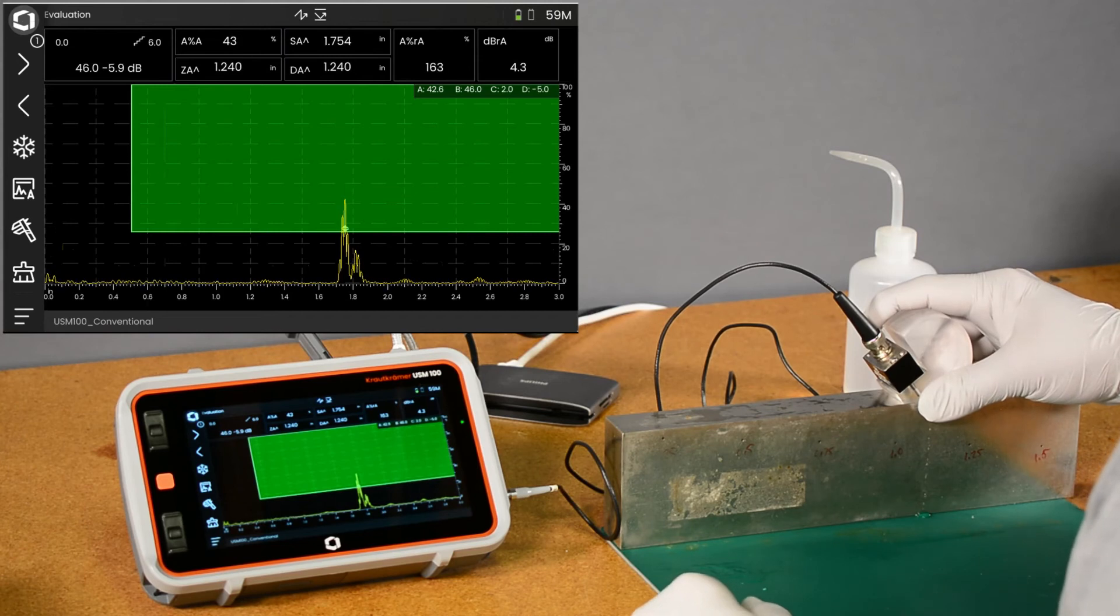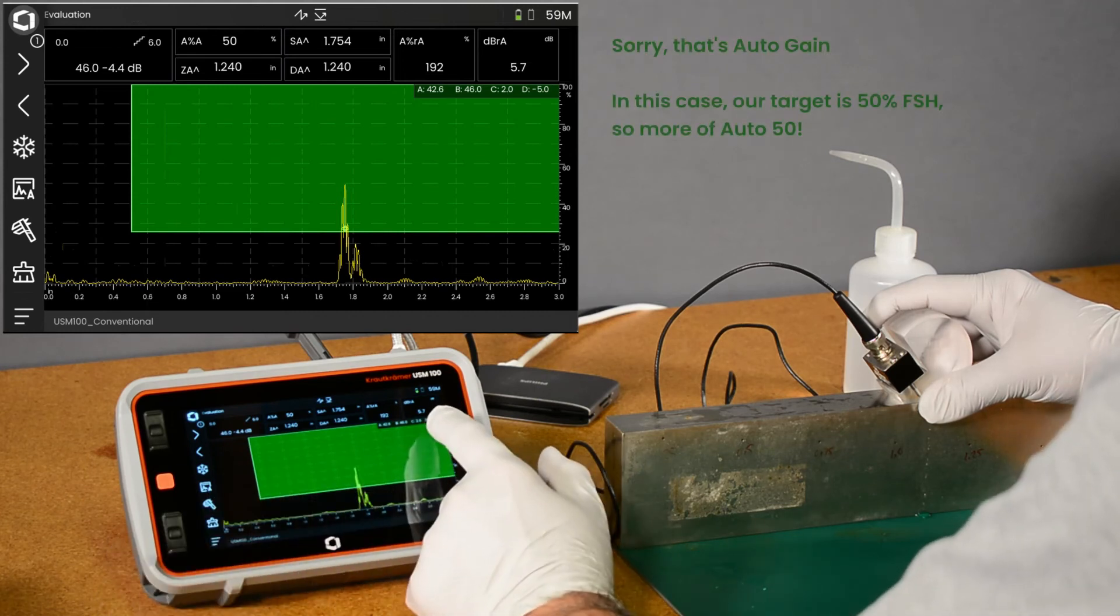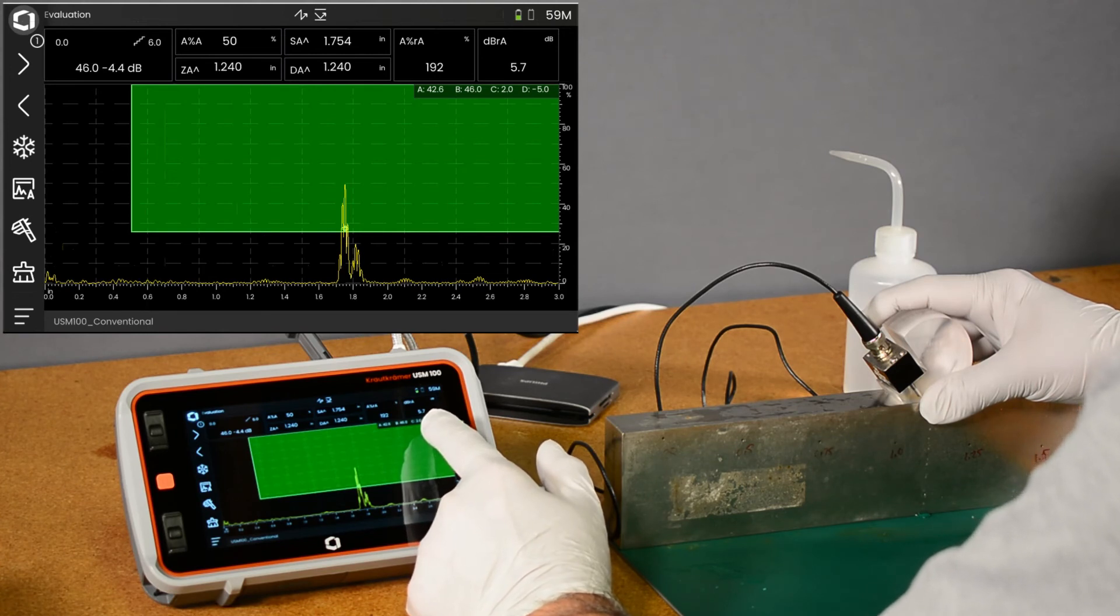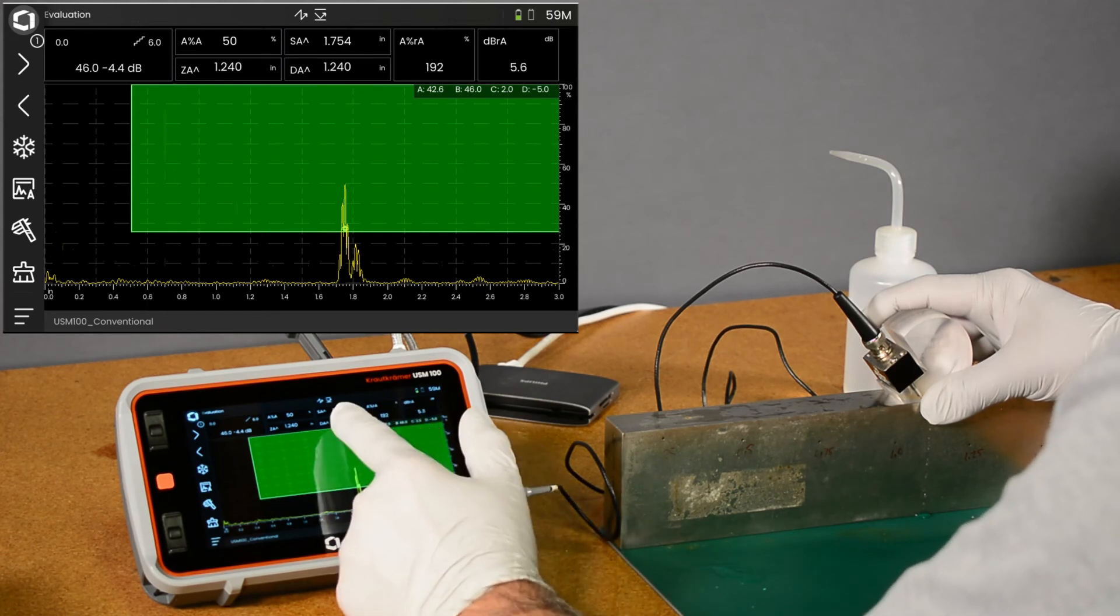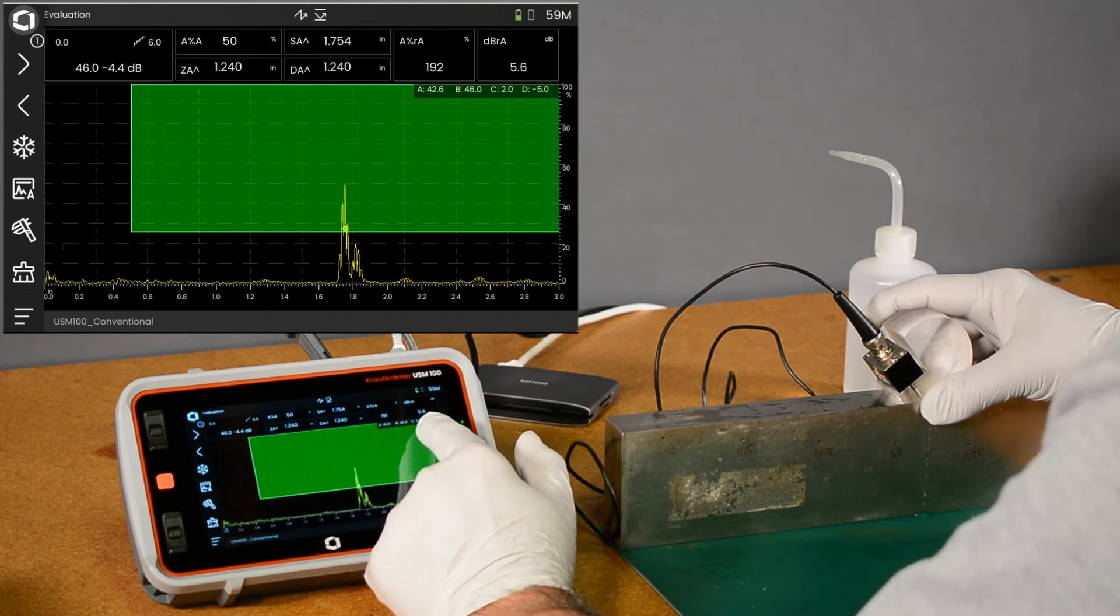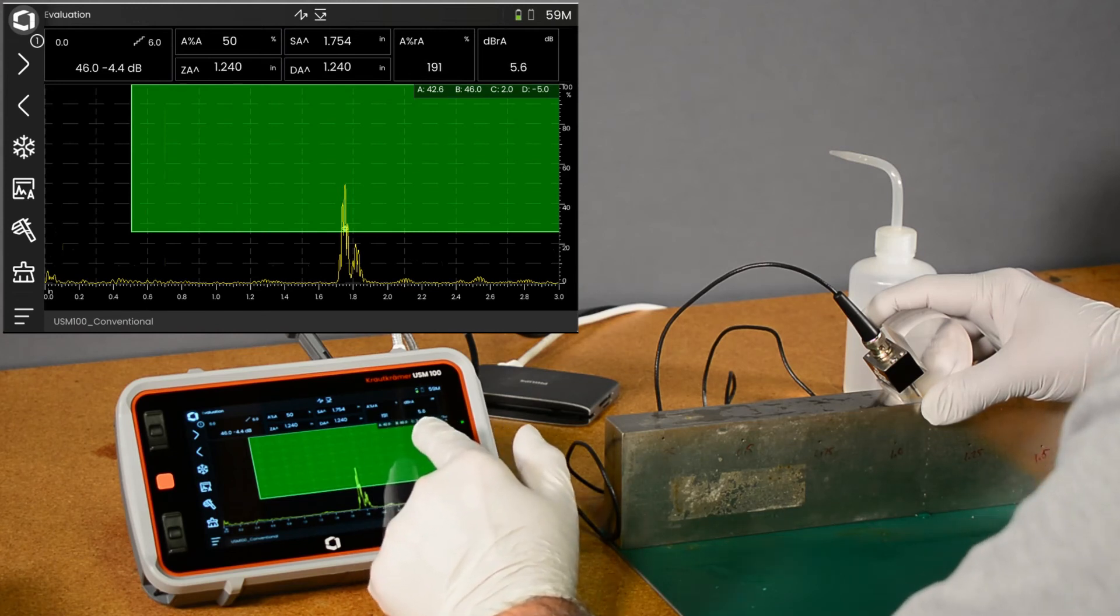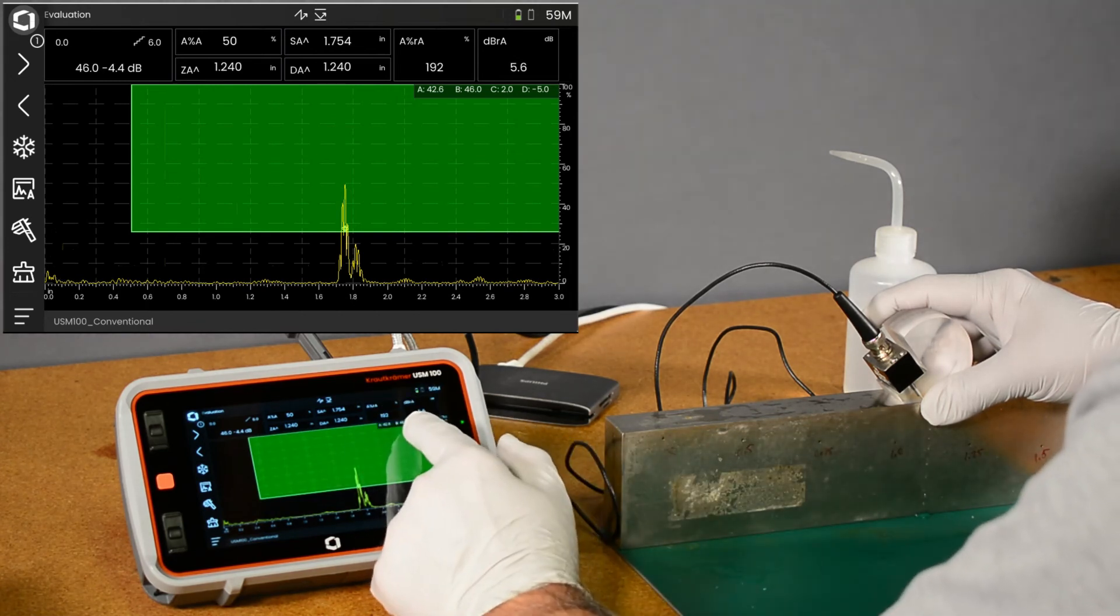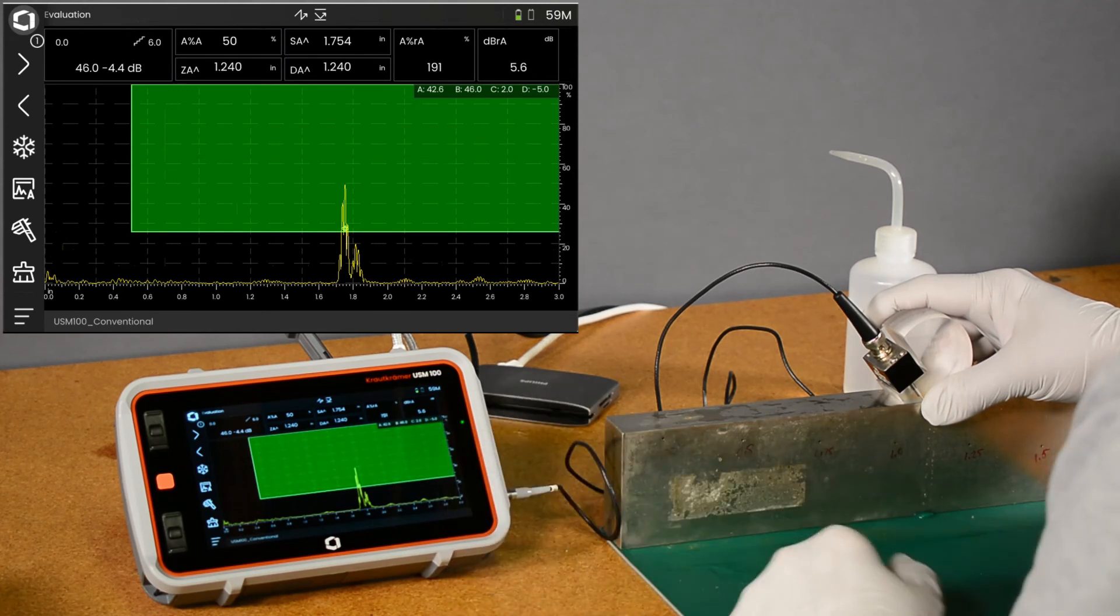I'm peaked up on the inch and a quarter. Hit auto gain. Now we see our material attenuation correction was calculated as 2 dB. Our sound path distance is 1.75 inches. Our material attenuation correction calculation for that gives us 2. Our gain is 42 again to get this echo to 50% compared to our reference gain of 46. So 42.6 minus 46 minus 2, and we have a class of 5.